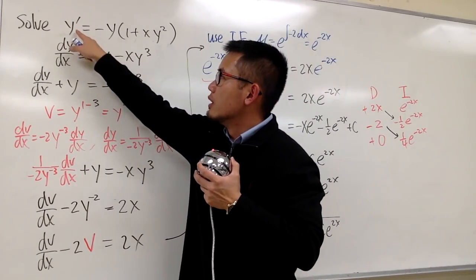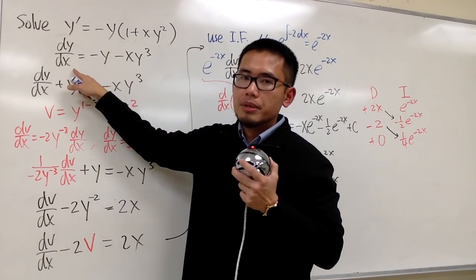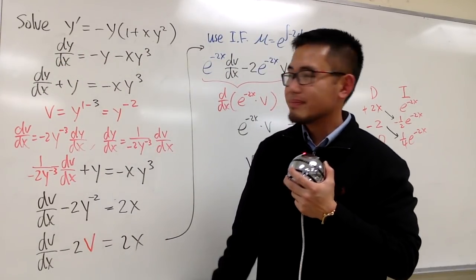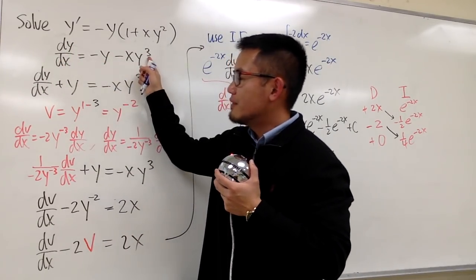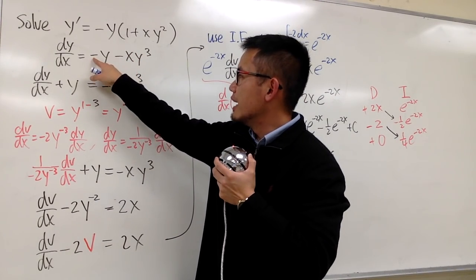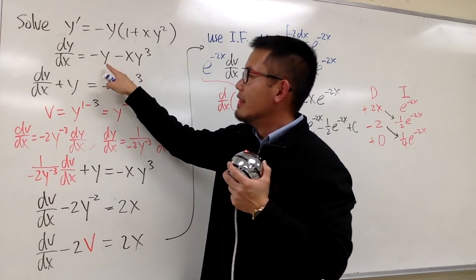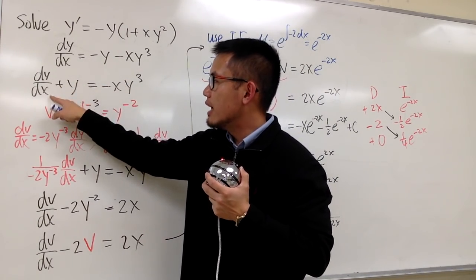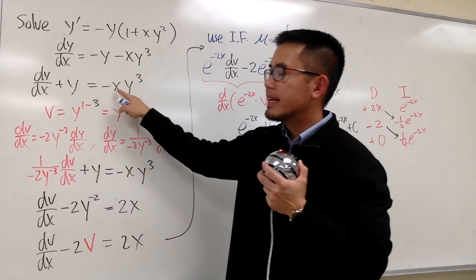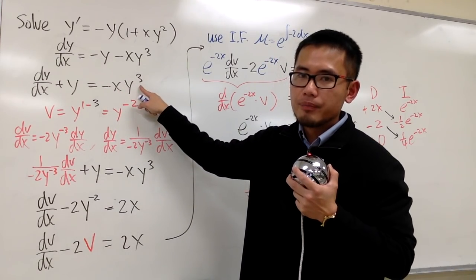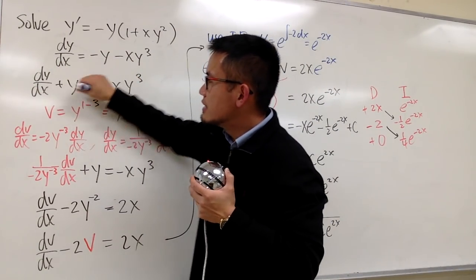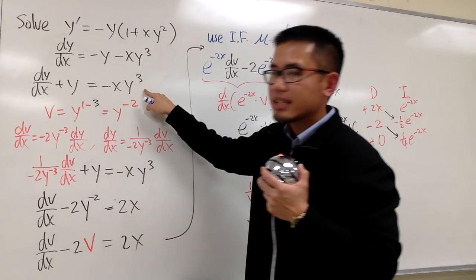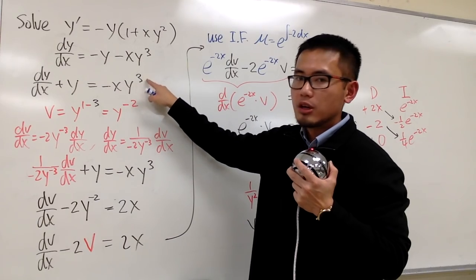I rewrote y' as dy/dx, because this notation is usually preferred in differential equations. So this is what we have, and I see that we have negative y to the first power. Let me add y on both sides, so I end up with dy/dx plus y equals negative x times y to the third power. The left-hand side looks like a linear differential equation, but the whole thing is not, because we have this y to the third power.